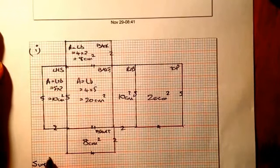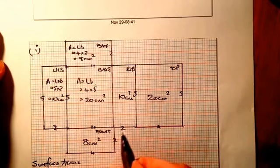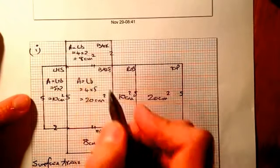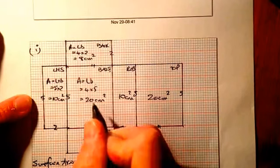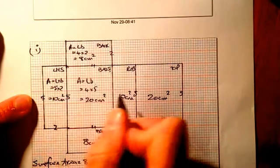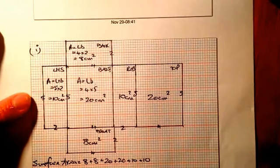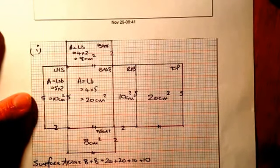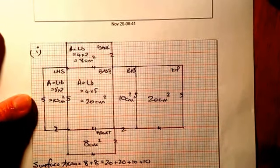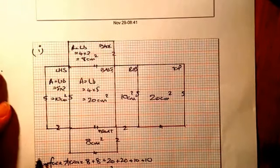For surface area, I'm going to add all these parts up. I've got eight, I've got another eight down here, I've got twenty, I've got another twenty, and I've got ten and ten. Adding all of these parts up gives the surface area of the cuboid. Surface area — when I add them together — that would be 76 centimetres squared.